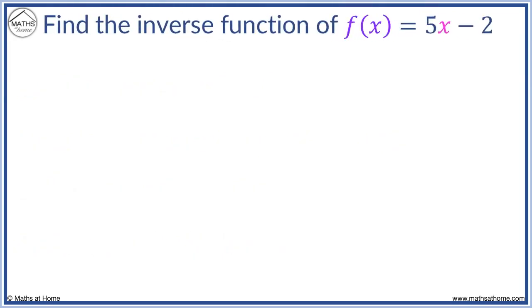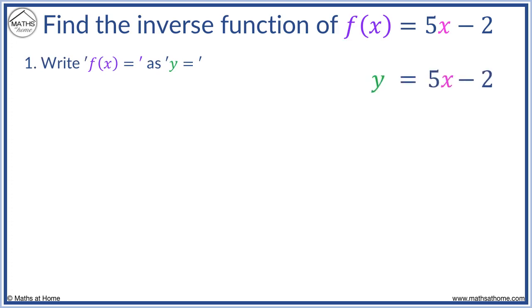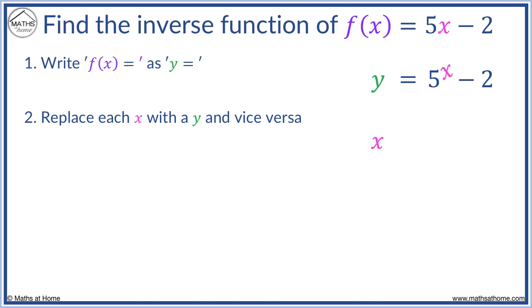For example, find the inverse function of f of x equals 5x minus 2. We first write y equals instead of f of x equals. We then replace x's with y's and y's with x's. y becomes an x, and x becomes a y. The rest of the equation stays the same.